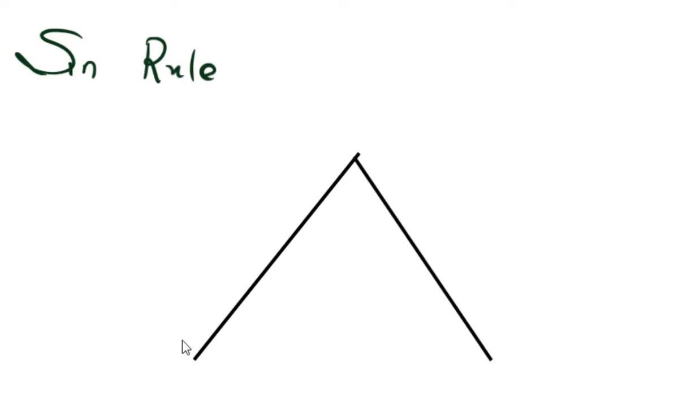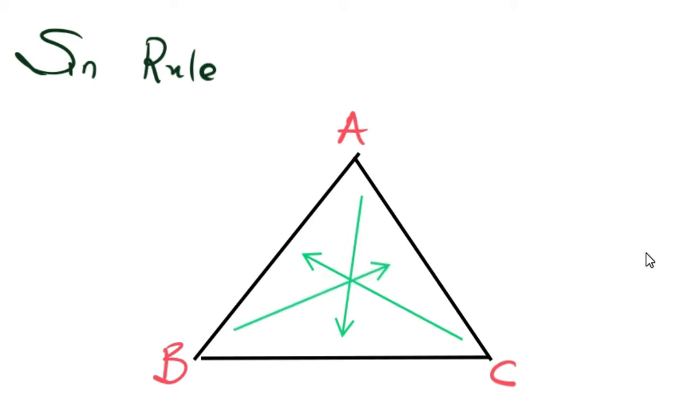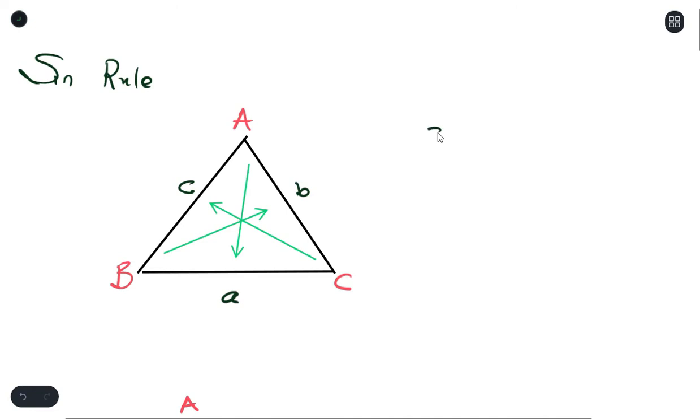I have an example with this triangle over here. Let's say the angles are A, B, and C. Now we normally say that the side which faces each of the angles gives you the small letter of the angle that you have. So meaning that I would have this as c, this is b, and this is a. Now what sine rule tells us is...